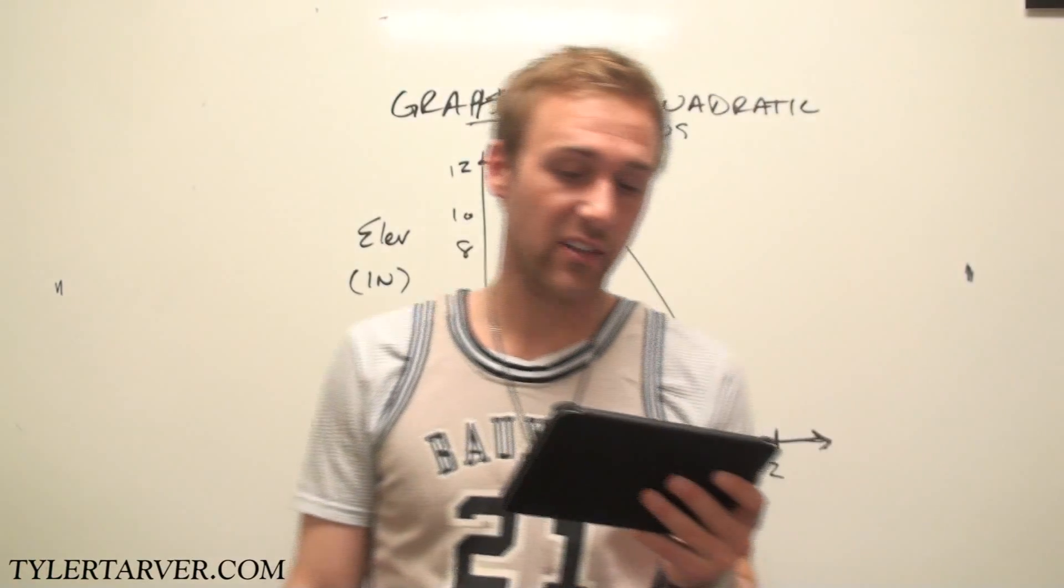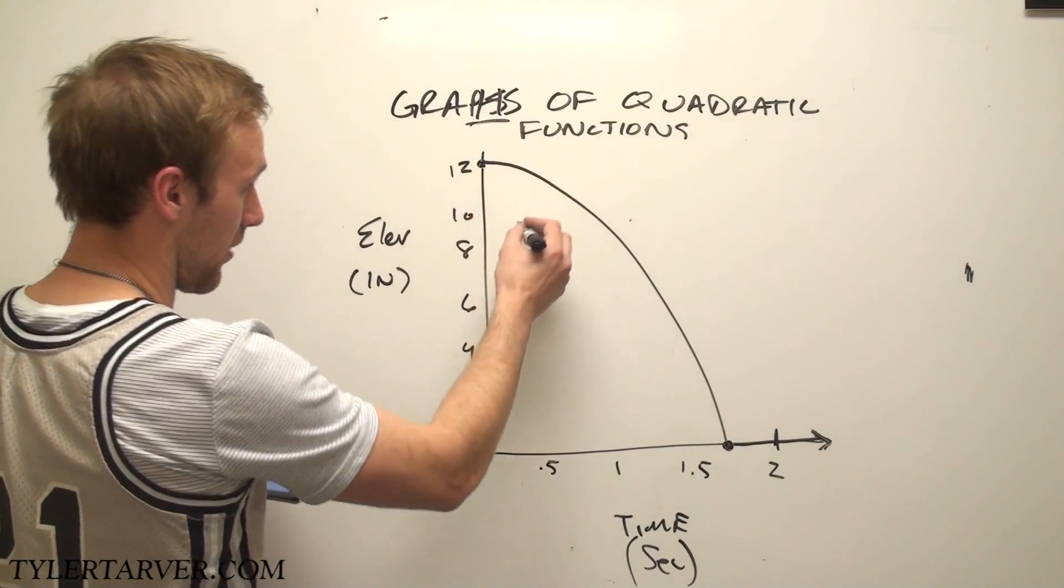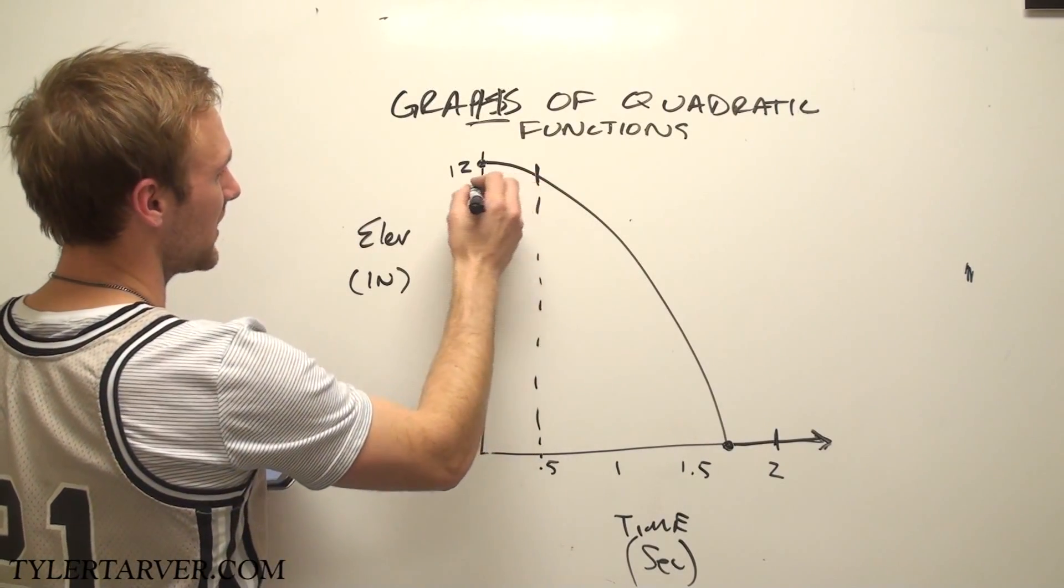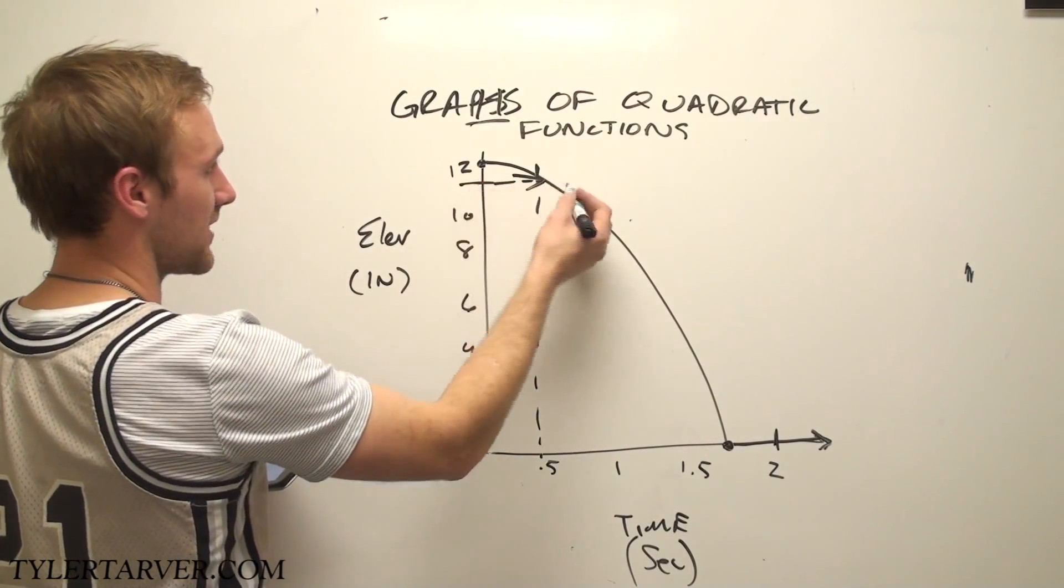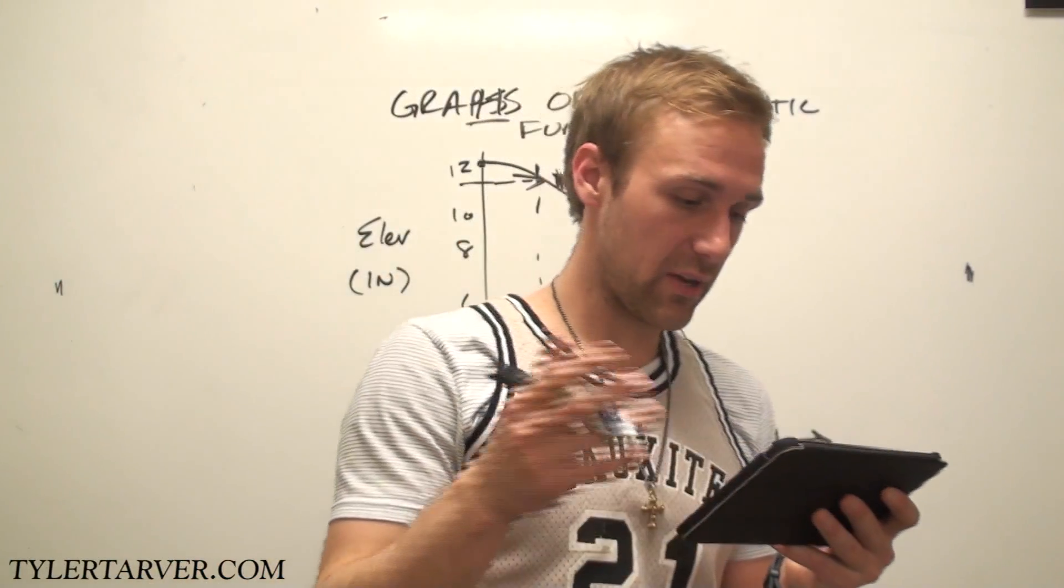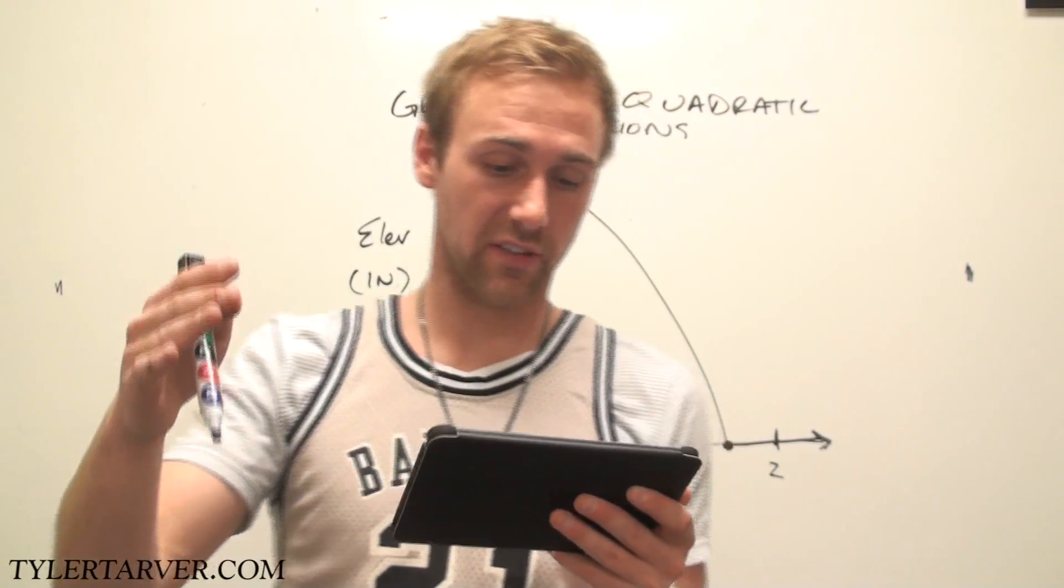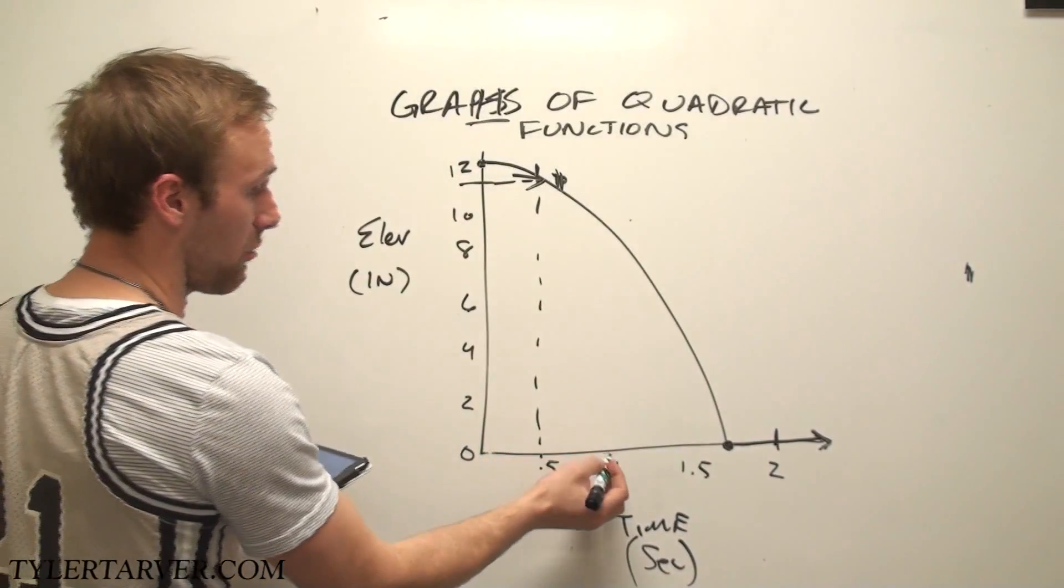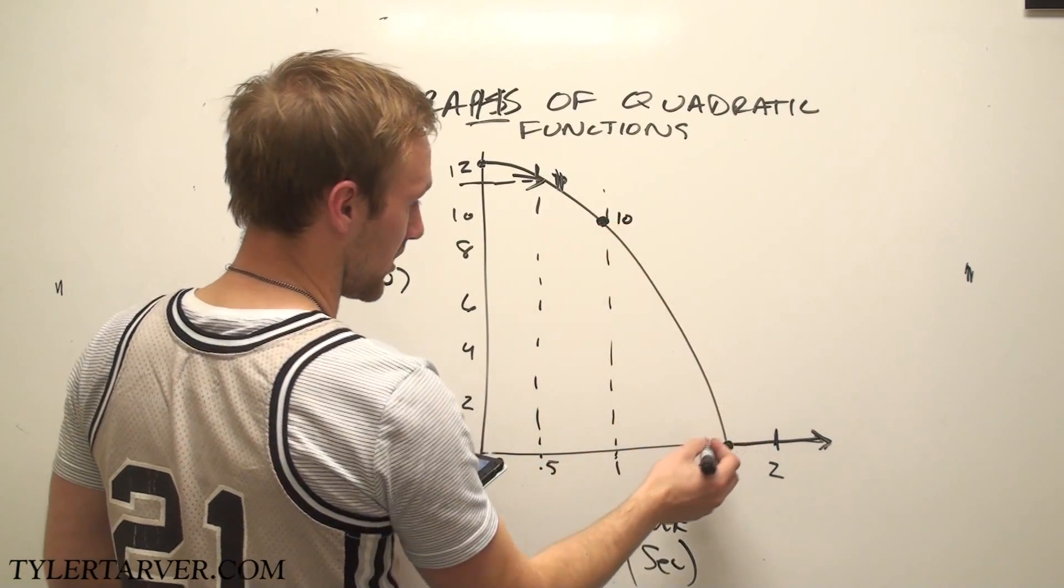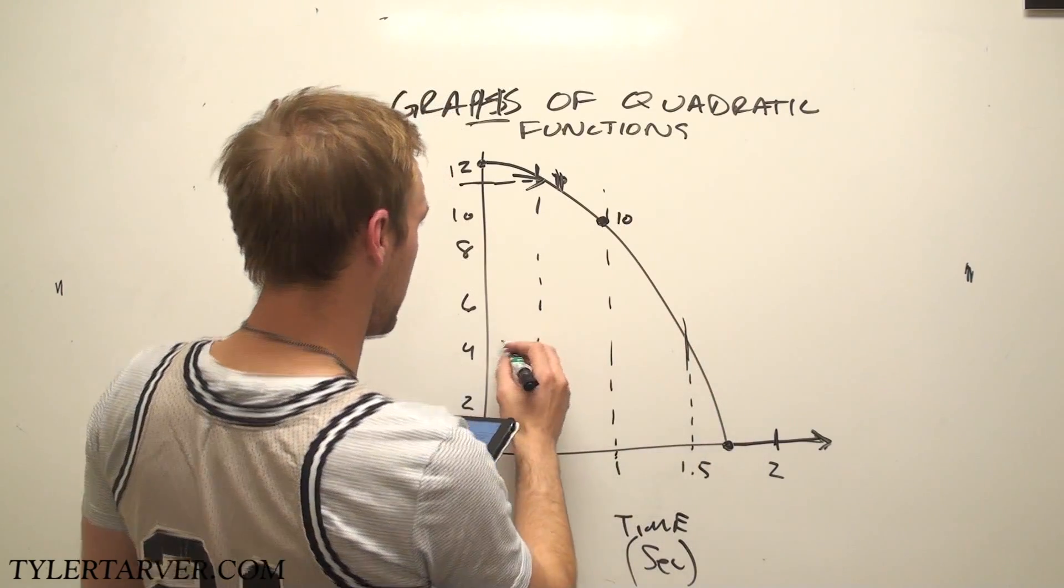Okay, estimate the number of inches of change in elevation of the ball from zero seconds to point five seconds. So from here to about right here, okay, let's say that's for continuity sake, let's say that's about an eleven. Okay, so what we want to do is we want to find the, what do I say, estimate the number of inches of change in elevation of the ball from zero to point five. Also estimate the change in elevation from ball between one and one point five, so right here,